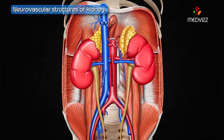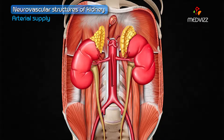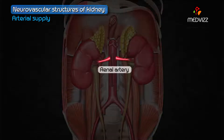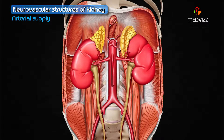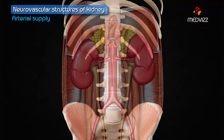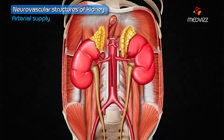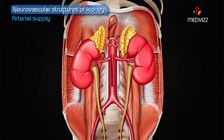We will discuss the neurovascular structures of the kidney, beginning with the blood supply. The arterial supply of the kidney is mainly from the renal artery, which arises directly from the abdominal aorta at the level of L1 and L2 vertebrae, just below the origin of the superior mesenteric artery.